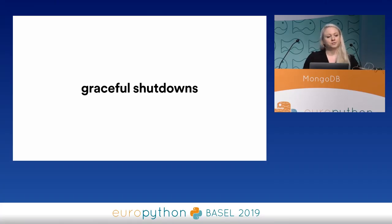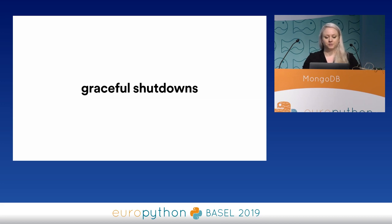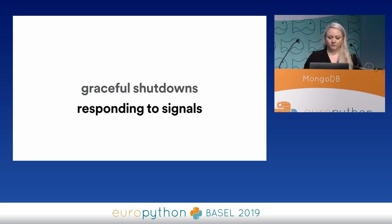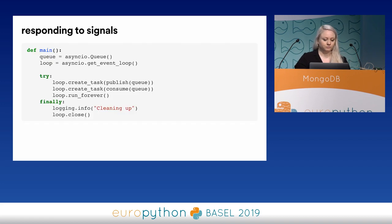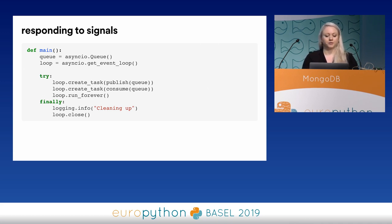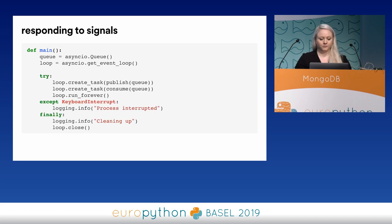Often you'll want your service to graciously shut down if it receives a signal of some sort — like cleaning up open database connections, stop consuming new messages, finish responding to current requests while not accepting new ones. So if we happen to restart an instance of our own service, we should probably clean up the mess we've made before exiting completely. Here's some typical boilerplate code to get the service running: a queue instance, setting up the loop, scheduling the publish and consume tasks, and then starting the event loop. Maybe you even catch the commonly known KeyboardInterrupt exception.